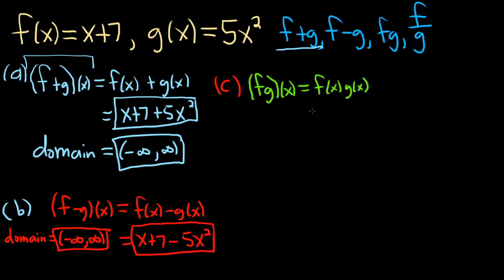f of x is equal to x plus 7. So x plus 7. And then g of x is 5x squared. 5x squared. And we just have to multiply.